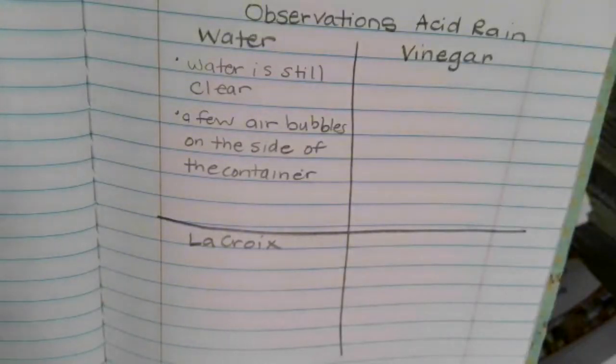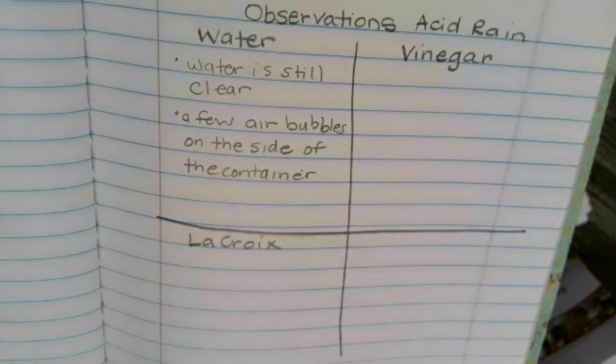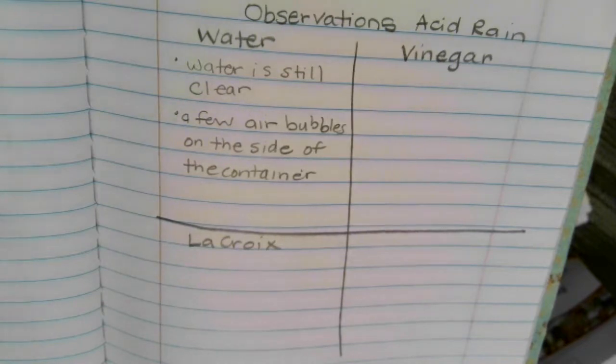Okay when I made my observations with water I noticed the water hadn't changed color. It was still clear and I do notice some bubbles but they're on the side of the container which makes me know that those are air bubbles and not a chemical reaction.